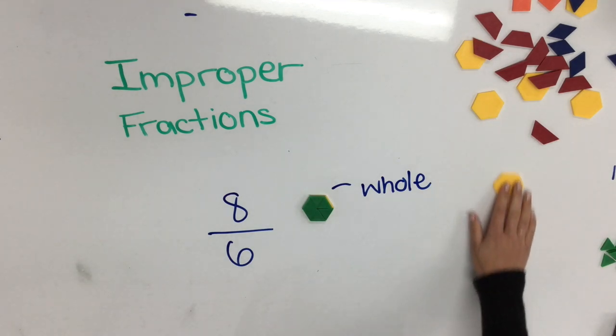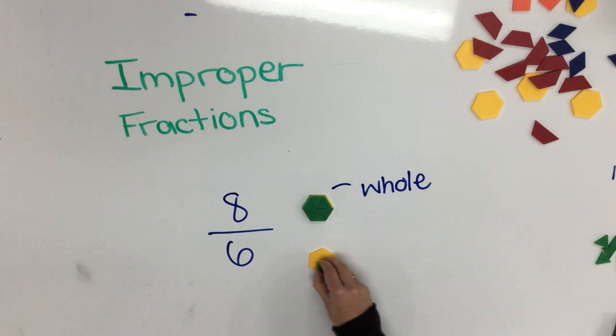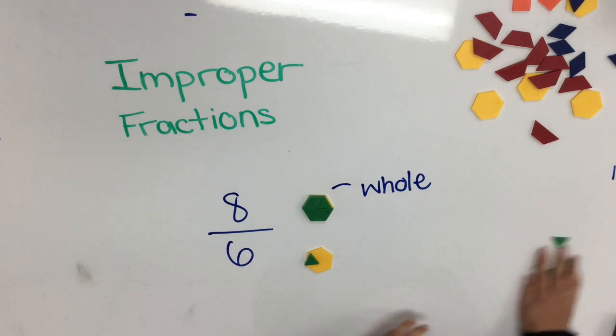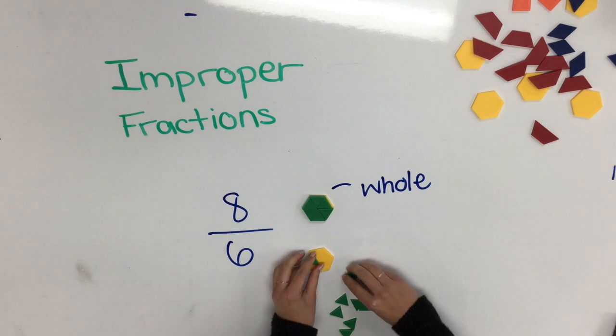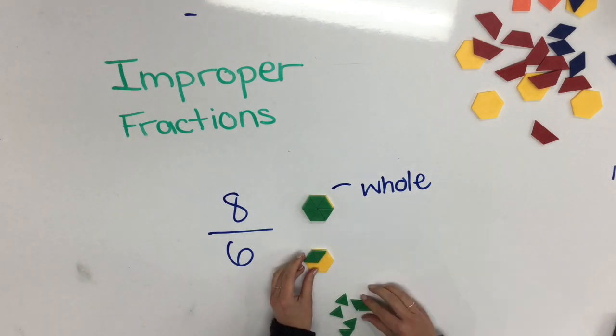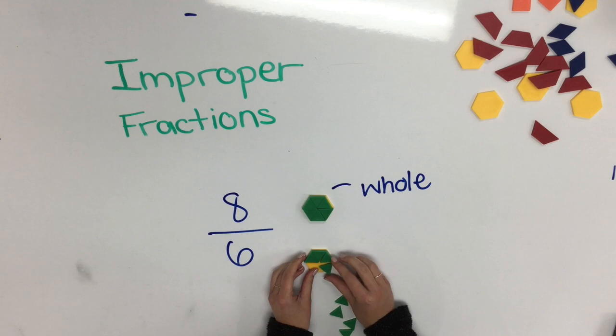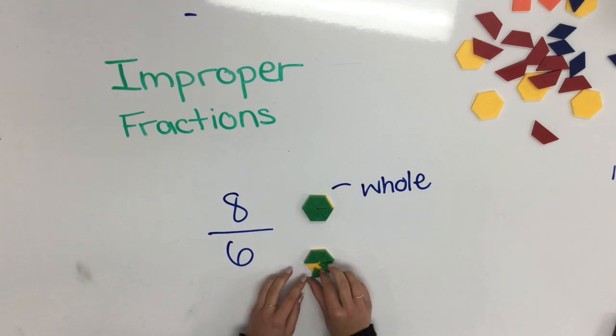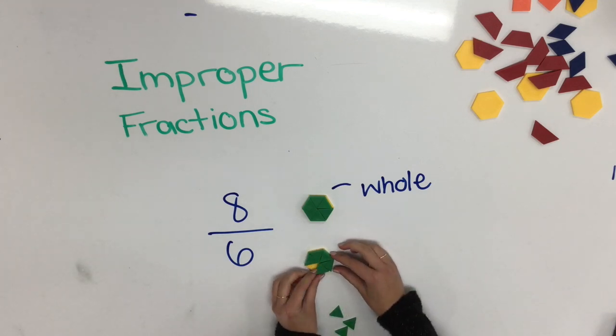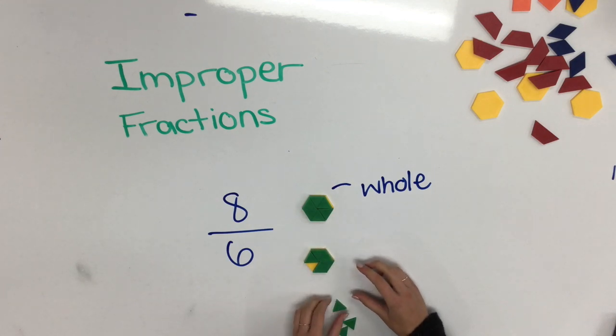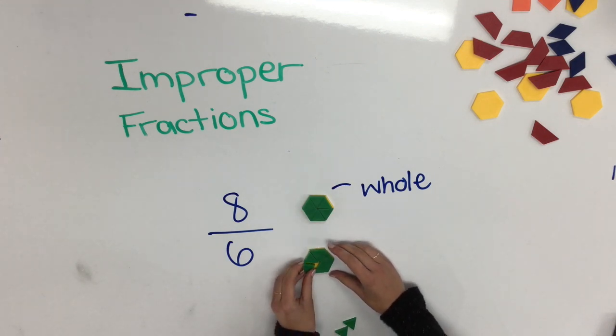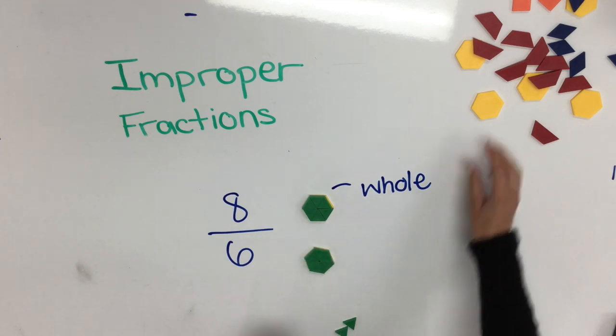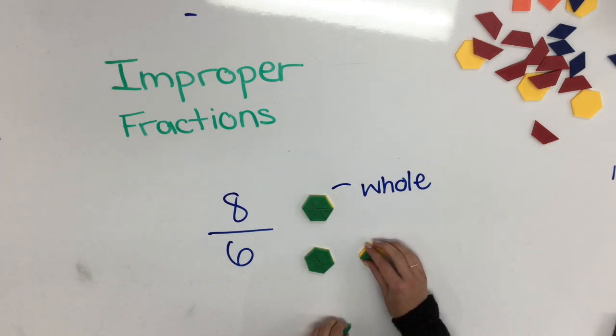We'll need one, two, three, four, five, six, seven, eight sixths.